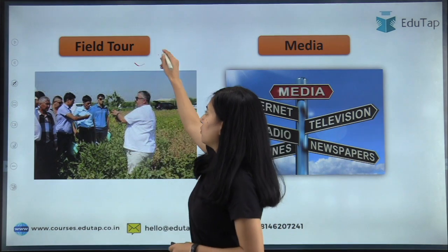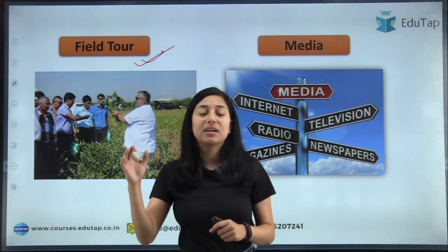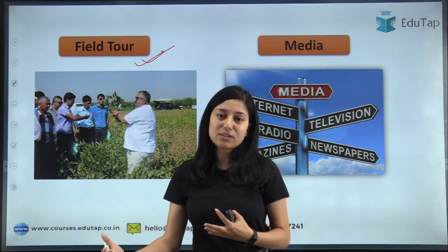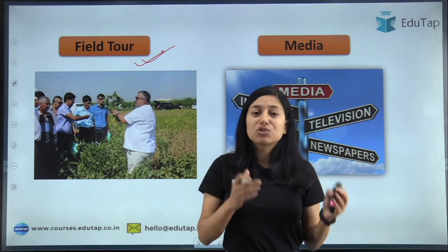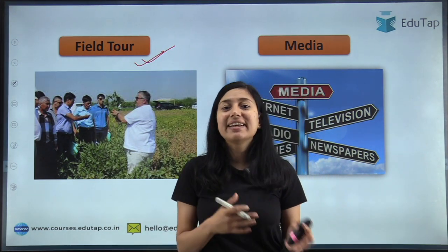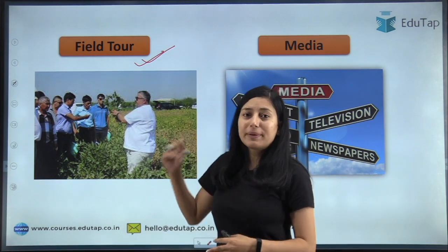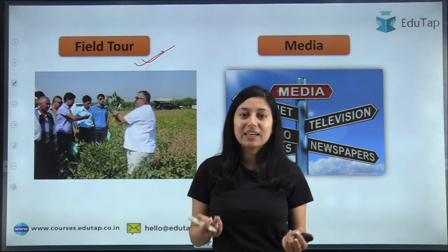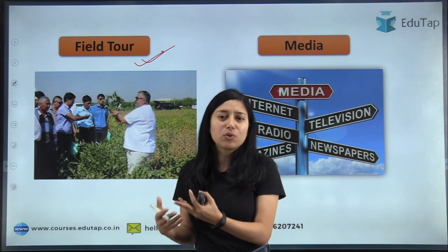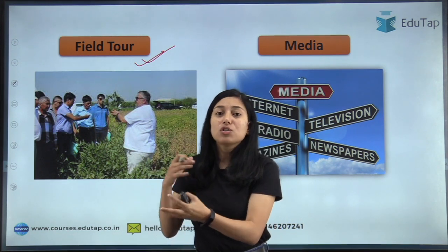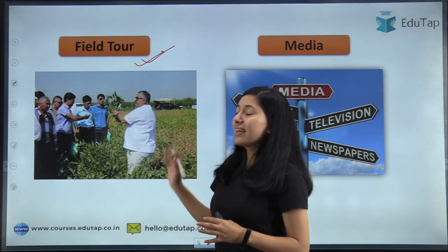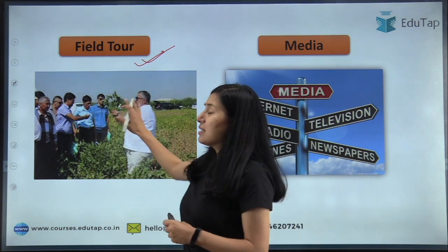Moving on to the next — field tour. In a field tour, a tour is organized for a group of farmers and they are taken to a place where the actual scientific method is being adopted by people or conducted by scientists, and then they are educated by it. Basically, farmers are taken to the place where they come to see the advanced technology, research, and results — so that they can get information regarding that actual technology. This method is your field tour method.